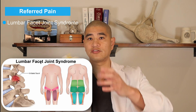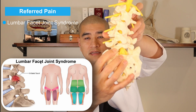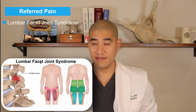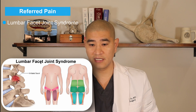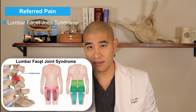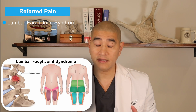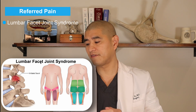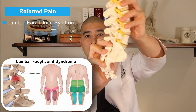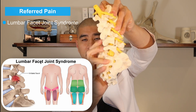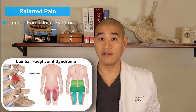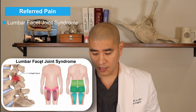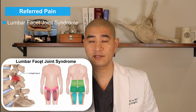The first is lumbar facet joint syndrome. The lumbar facet is a small joint in the back of the spine that can become arthritic or inflamed, radiating pain through the buttock, down the back of the leg, and sometimes down the front. In my experience, facet joint syndrome rarely goes below the knee. Facet joint pain is often worse with extension — because extending crunches down on the facet joint — and is often worse in the morning. It's also common after a car accident, which can stretch the joint capsule.